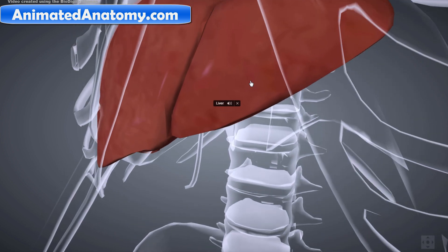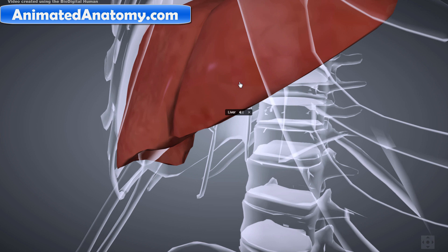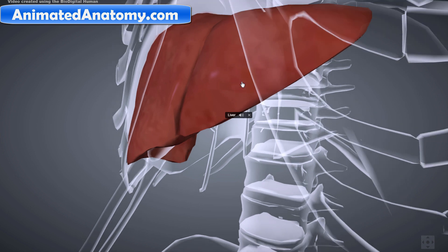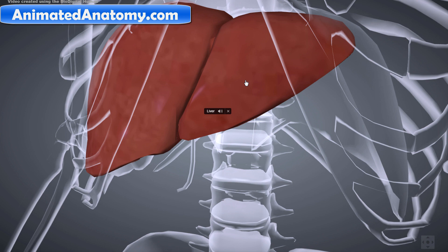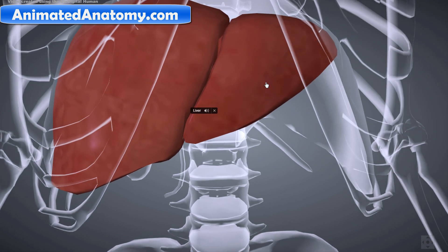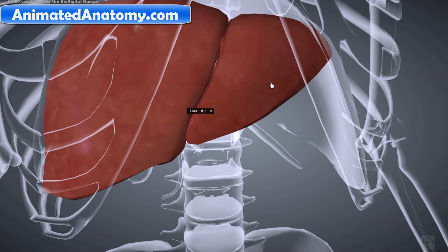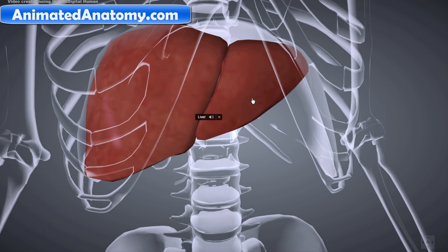The liver is highly specialized tissue consisting mostly of hepatocytes, which regulate a wide variety of high-volume biochemical reactions, including the synthesis and breakdown of small and complex molecules, many of which are necessary for normal vital functions. Estimates of the organ's total number of functions vary, but textbooks generally cite around 500.